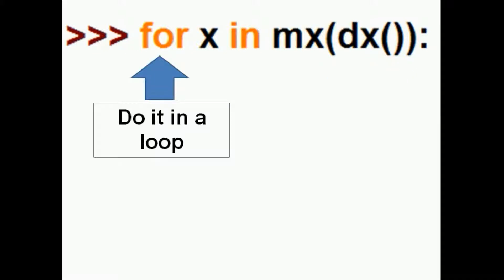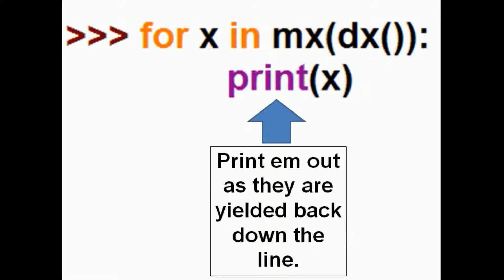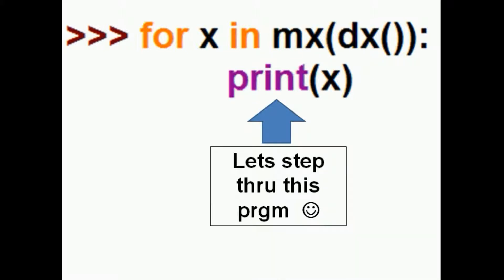And I'm going to do all of this in a loop. For X and MX, and I pass it the DX function's name, and print them out as they are yielded back down the line. I wonder what that means. We'll find out in a second. How? Well, let's step through this program and see how it does this.